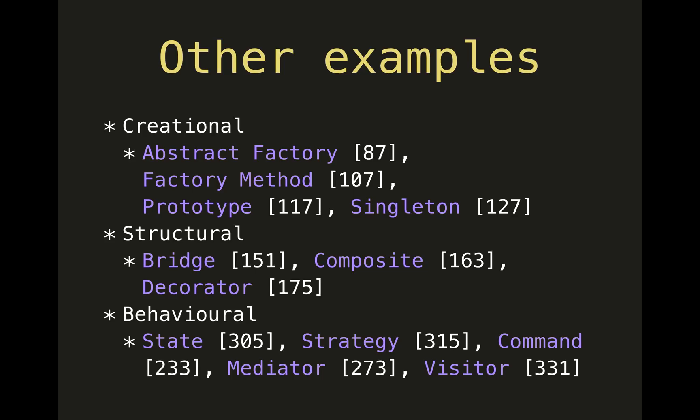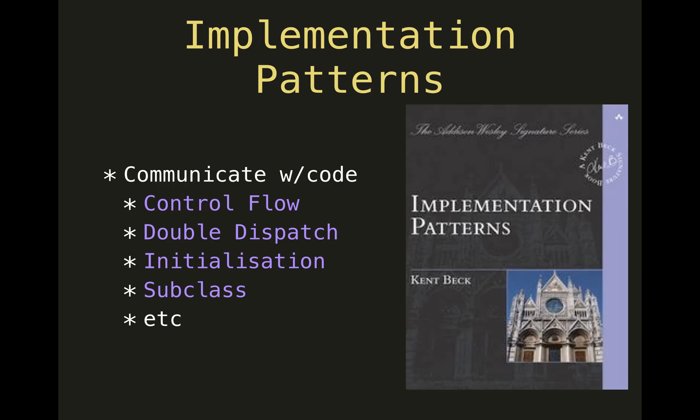Command is when you want to vary the number of methods in your object dynamically. Mediator is when you have coordination between objects that you want to make very explicit. Visitor is when you need to traverse data structures that are not uniform — meaning they also have their own hierarchies of data.